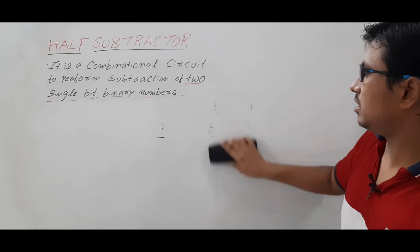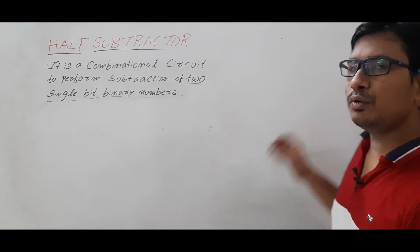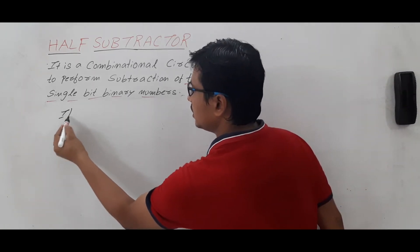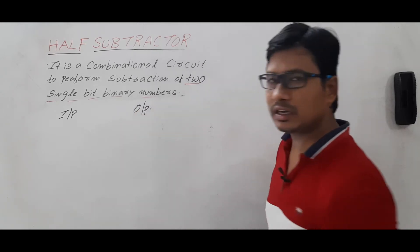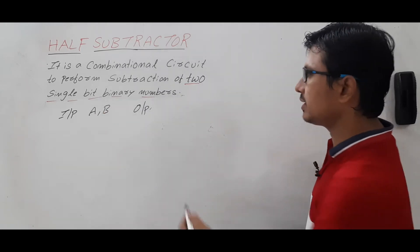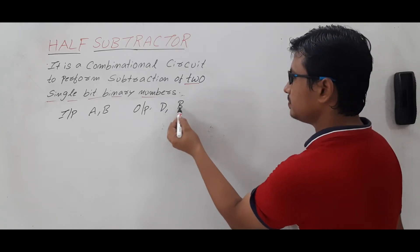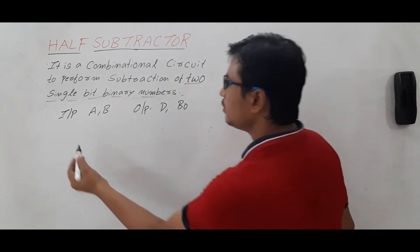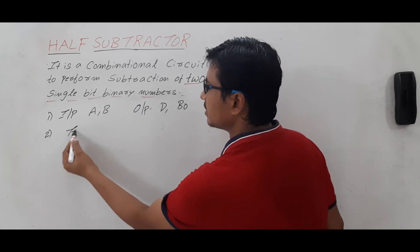Now I want to construct the combinational circuit for the half subtractor. The first step is to identify the inputs and outputs. A and B are the inputs, and the outputs are the difference and the borrow (BO). The next step is to find the truth table for it.